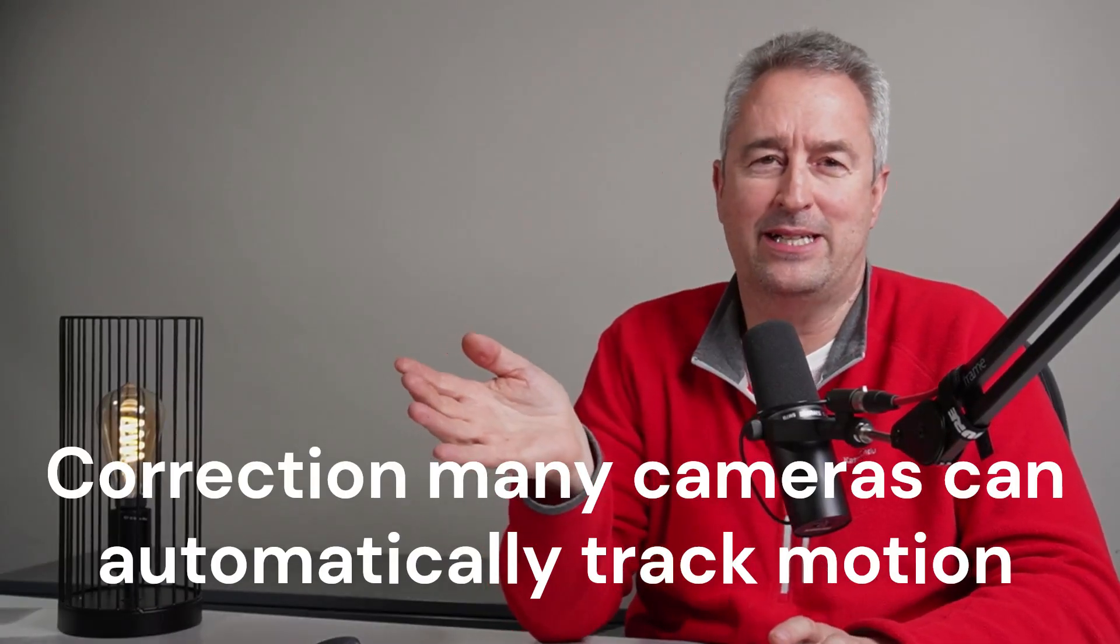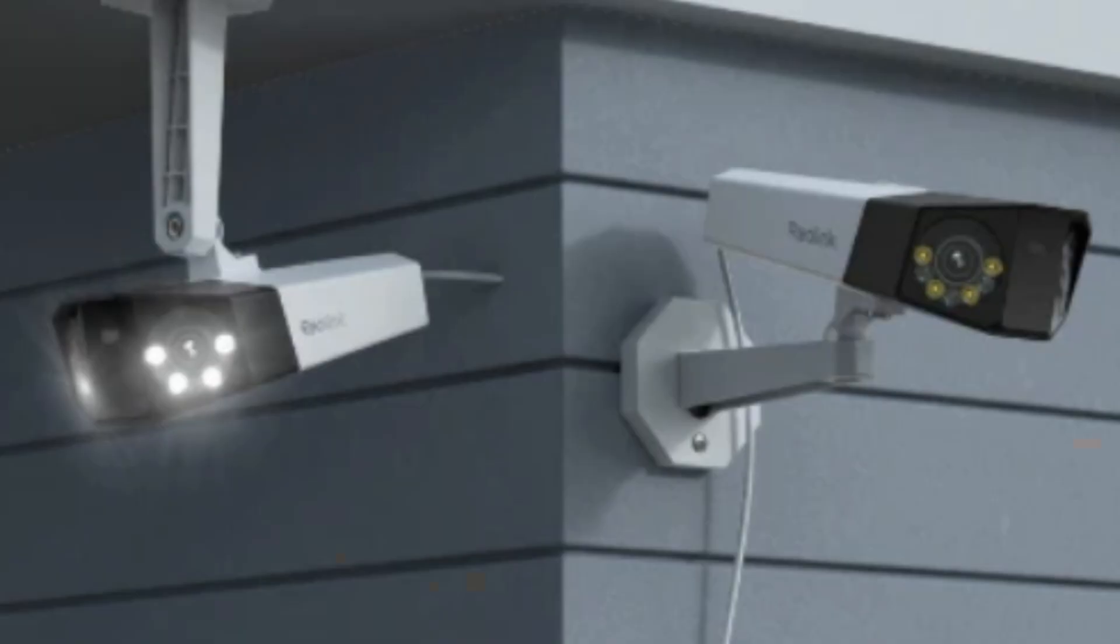Point seven is PTZ versus fixed. Pan tilt zoom means that you can move the camera around as well as zooming in. This is all good and well if you're actually watching the camera at the time that you want to see something, but if you're looking at footage that you've recorded you've got no real way of panning and tilting. You may have some zoom but certainly not optical zoom. So the other option is to go with really wide angle cameras and some of the new cameras in the Reolink range now offer the dual cameras where they can cover an extremely wide angle of field or field of view.